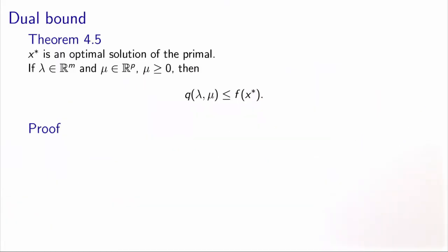When you solve the relaxed problem and find its optimal solution, what you obtain is a lower bound on the optimal value of the primal problem. This is an important result, referred to as Theorem 4.5 in the book: if x* is an optimal solution of the primal, and lambda and mu are the penalty parameters with mu non-negative, then the value of the dual function q(lambda, mu) is a lower bound on the optimal value of the primal problem.